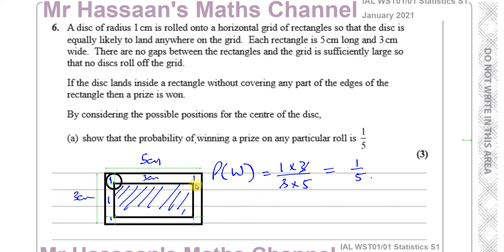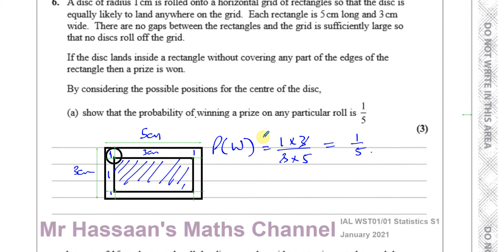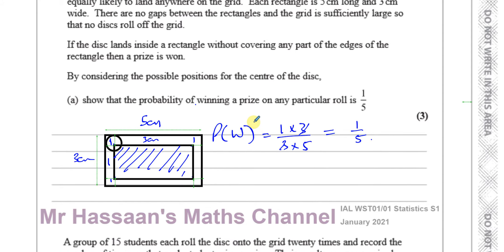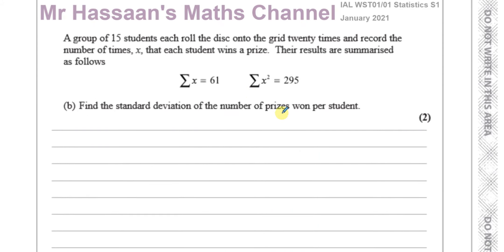You have to think in a geometric kind of way — making a little sketch does help. Now part B: a group of 15 students each roll the disk onto a grid 20 times and record the number of times x that each student wins a prize. Find the standard deviation of the number of prizes won.